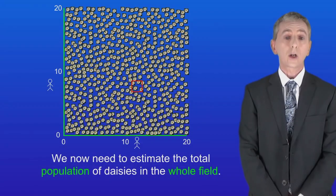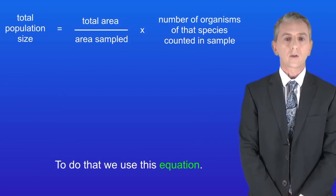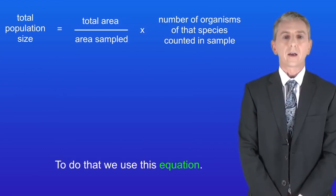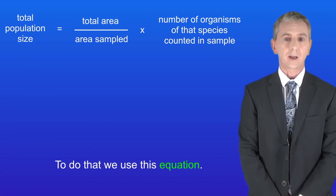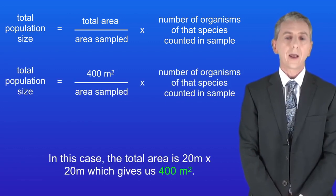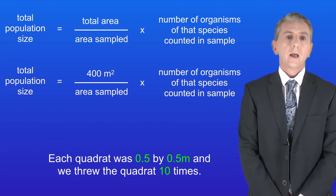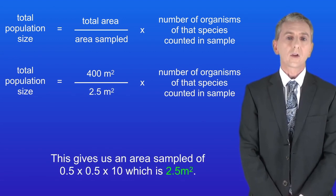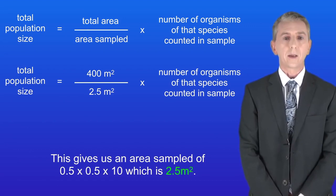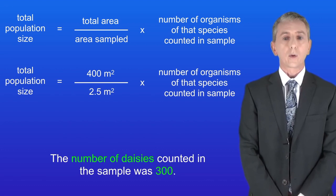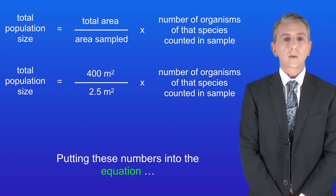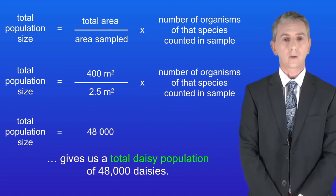We now need to estimate the total population of daisies in the whole field. The equation is: total population size equals the total area divided by the area sampled, multiplied by the number of organisms of that species counted in the sample. In this case the total area is 20 meters by 20 meters, giving 400 square meters. Each quadrat was 0.5 by 0.5 meters and we threw the quadrat 10 times, giving an area sampled of 0.5 × 0.5 × 10 = 2.5 square meters. The number of daisies counted was 300, giving a total population of 48,000 daisies.